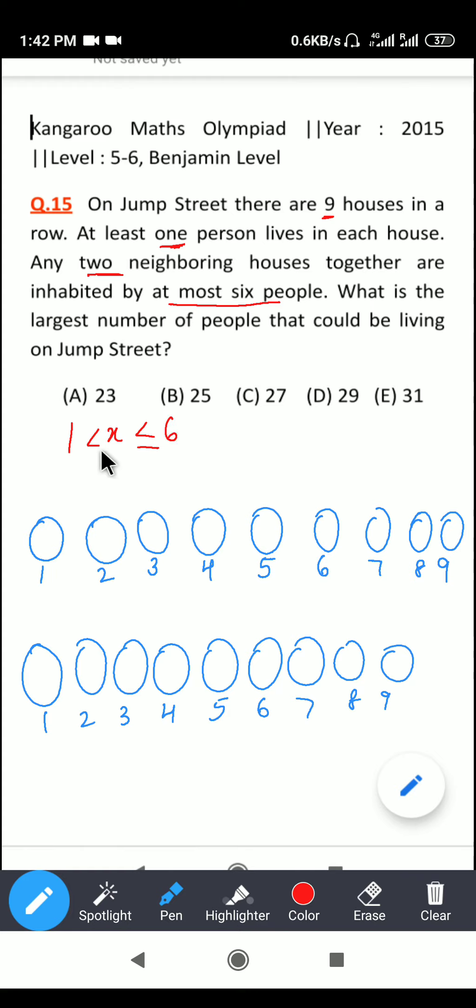Now what is the largest number of people that could be living on Jump Street? So the options that we have is A) 23, B) 25, C) 27, D) 29, E) 31.